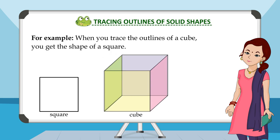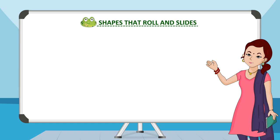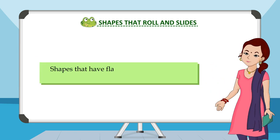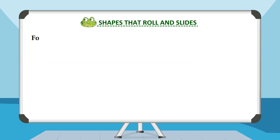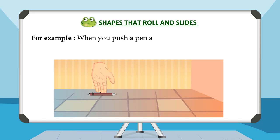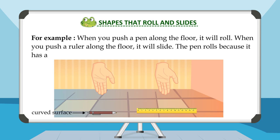Shapes that roll and slide. Shapes that have flat surfaces can slide, and shapes having curved surfaces can roll. For example, when you push a pen along the floor it will roll. When you push a ruler along the floor it will slide. The pen rolls because it has a curved surface, and the ruler slides because it has a flat surface.